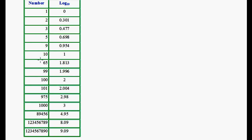Let's take different numbers. For example, the logarithm of 65 is 1.8. Let's take another number: logarithm of 975 is 2.98. What about logarithm of 1000? Logarithm of 1000 is 3. What about logarithm of 89,456? That is 4.9.